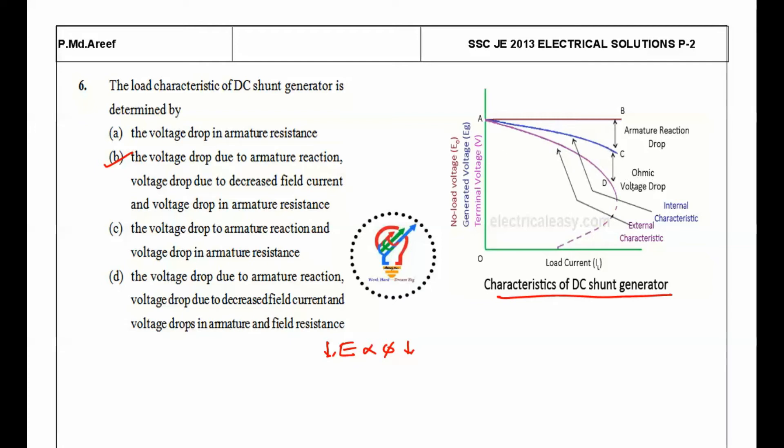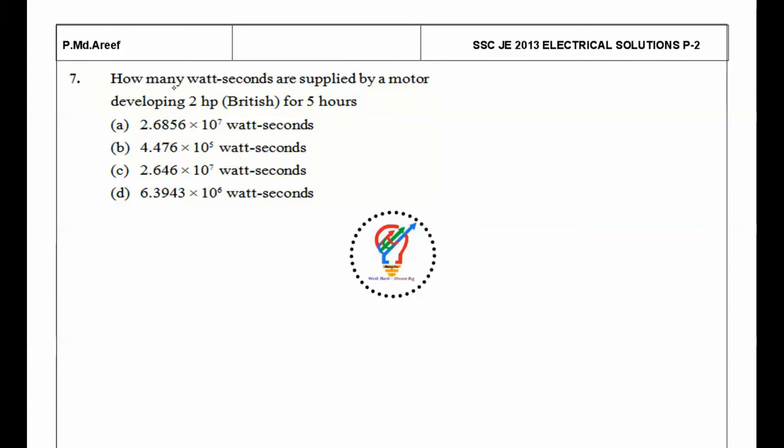Next question: how many watt-seconds are supplied by a motor developing 2 HP British for 5 hours? One HP is nothing but 765 watts, and one hour is equal to 3600 seconds. Now I want to know what is watt-second.